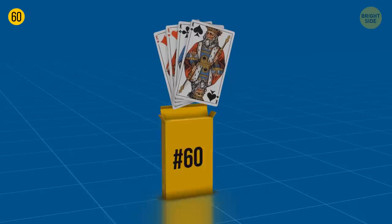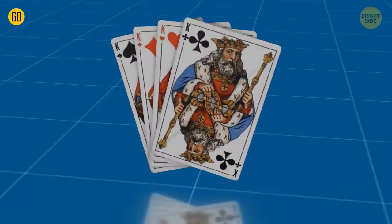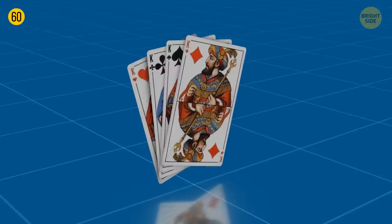Kings depicted on playing cards are real historical characters. Spades, King David. Clubs, Alexander the Great. Hearts, Charles the Great. Diamonds, Julius Caesar.